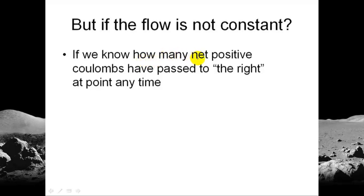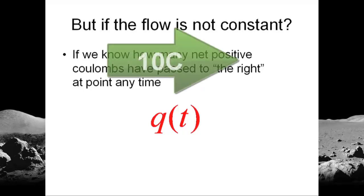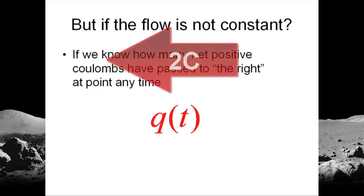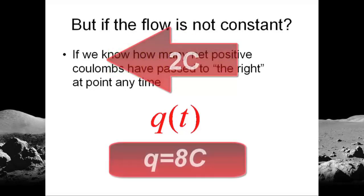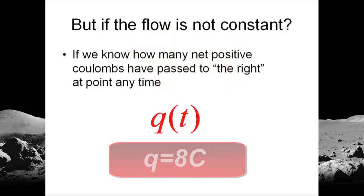If we know how many net positive coulombs have passed the checkpoint to the right at any moment, we have a function of time, q of t, the number of net positive coulombs that have crossed the checkpoint going to the right. Why net? Because we subtract the positive coulombs that come back. If 10 coulombs, positive coulombs, cross the checkpoint to the right and two of them come back to the left, then the value of q is 8 at that point in time.